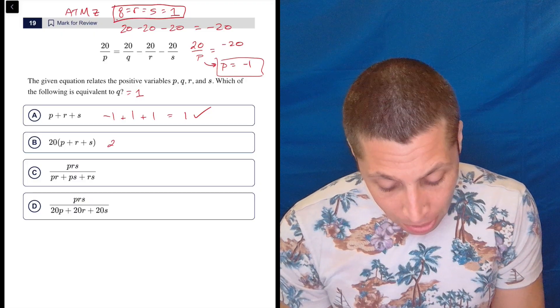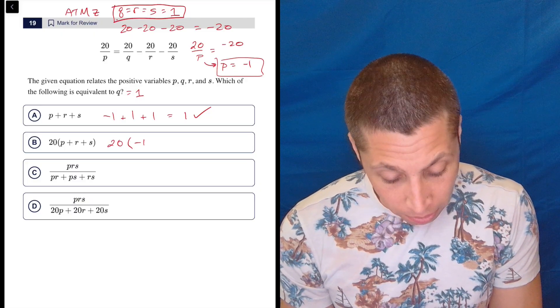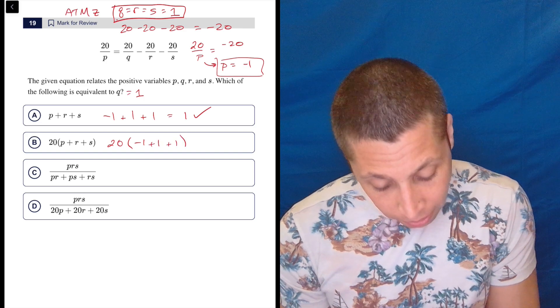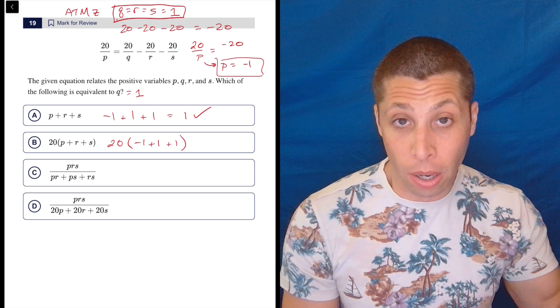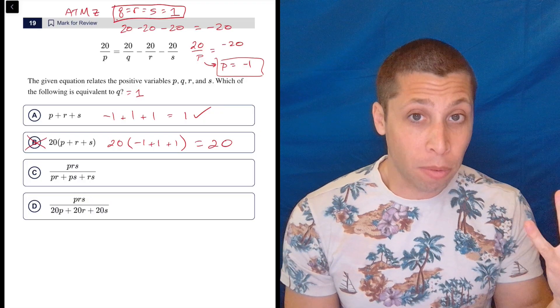So now I would just be okay, I need to get something equivalent to Q, so I need to get it equal to 1. So let's just be careful, but let's plug in. So P we said is negative 1, plus R is 1, plus S is 1. So negative 1 plus 1 is 0, plus 1 is 1. So that checks out. Let's keep going. Choice B: 20, and then P we said was negative 1, R is 1, S is 1. So the negative 1 plus the 1 is 0, and then 20 times 1 is 20. So that doesn't work. Great, we're making progress.